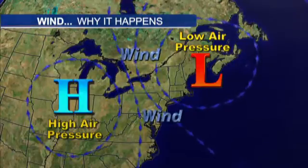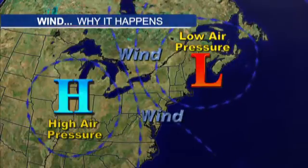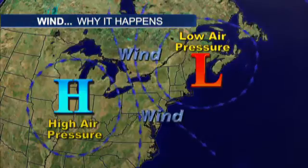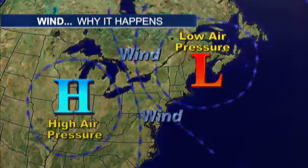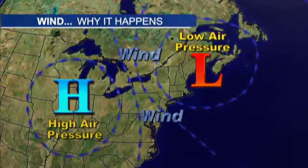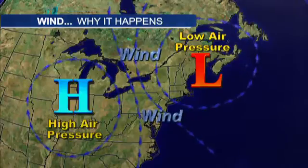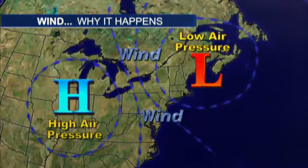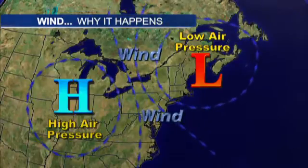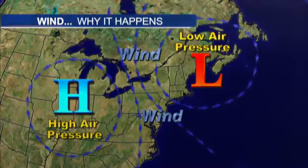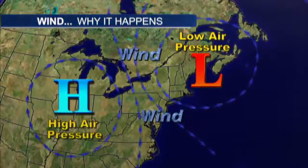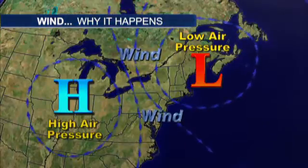It's something we call a pressure gradient. A tight pressure gradient means stronger winds. We typically see that during the change of season — spring especially — when we have greatly differing temperatures across a region. These temperature differences cause big differences in air pressure, which causes an awful lot of wind.